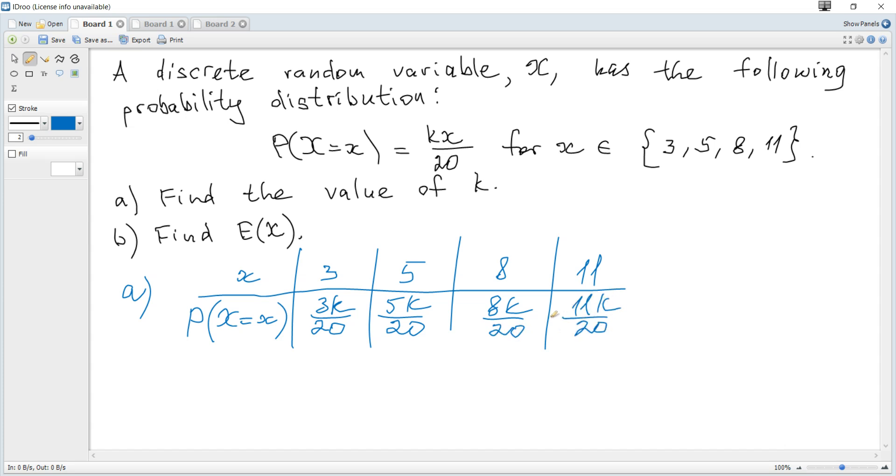How to find k? We know that total probability is always 1. So if we add all these probabilities, the result is 1. So it becomes 3k over 20 plus 5k over 20 plus 8k over 20 plus 11k over 20 equals 1.